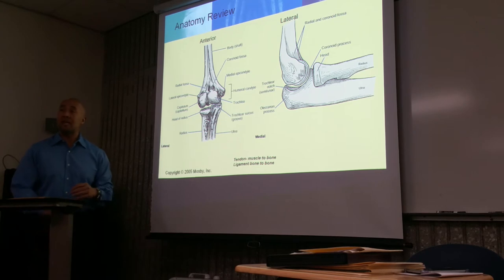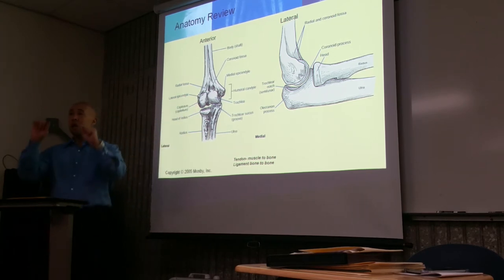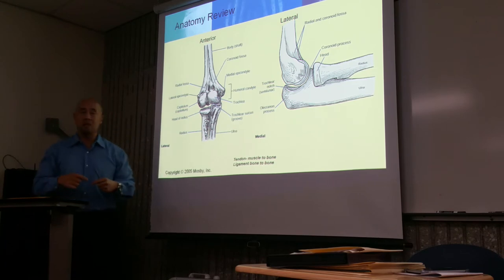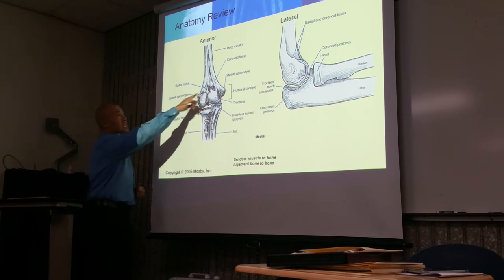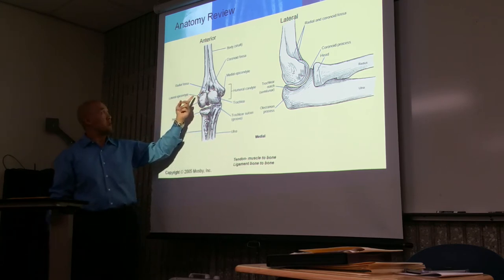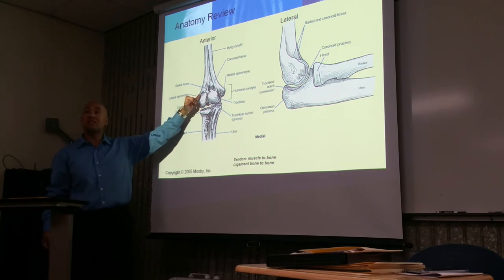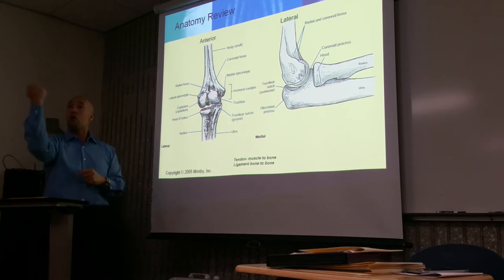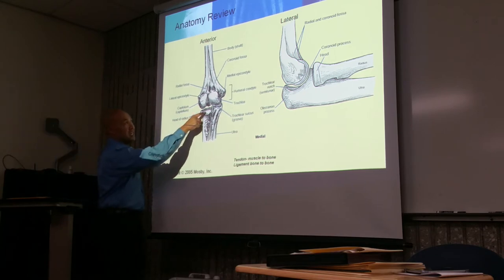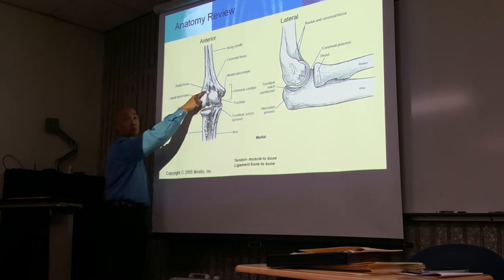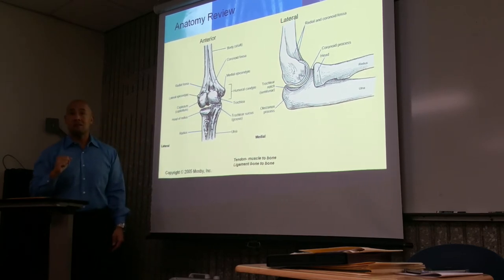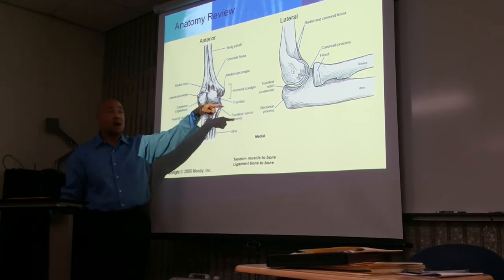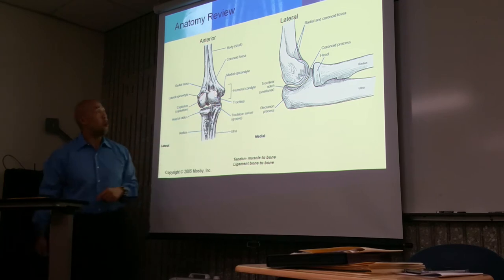On the anterior surface of the humerus, you have two indentations — little divots — on each side. On the radial side is the radial fossa. When you bend your arm, the head of the radius sits in this little divot — this is the radial fossa. Then you have another divot on the medial side, which is the coronoid fossa.